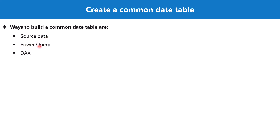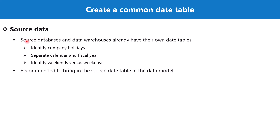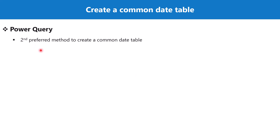Either you should bring in the date table from the source, or you should create it inside the Power Query environment. Source databases and data warehouses already have their own date tables — they identify company holidays, the calendar and fiscal year, and weekends and weekdays. The second preferred method is to create a common date table in Power Query, as we already saw in the Maven Market example, where we created a calendar table with a single column of unique dates and derived columns like start of week, month number, month name, and day of the week.